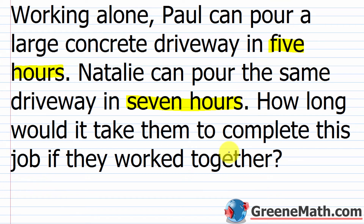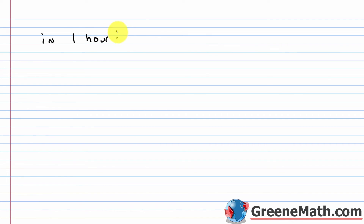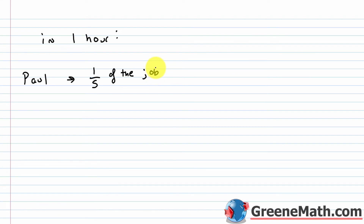The first thing to do is break this down into one unit of time — in this case, hours. In one hour, Paul completes one-fifth of the job, since he finishes in 5 hours. Natalie is a little slower — it takes her 7 hours, so in one hour she's one-seventh complete.